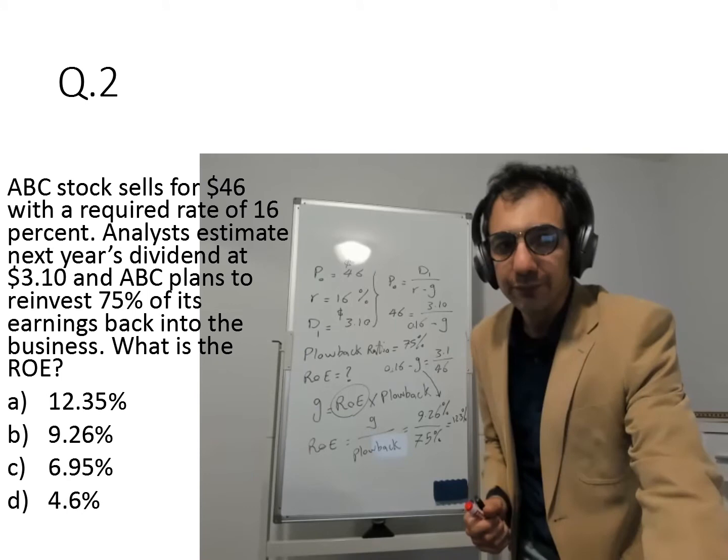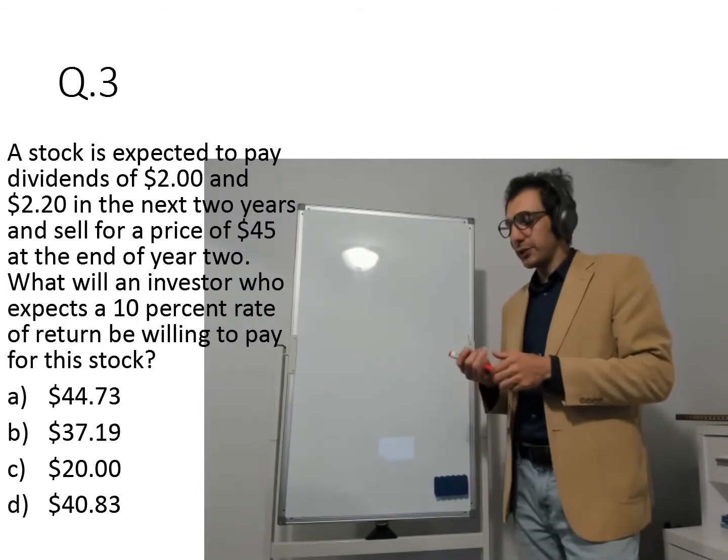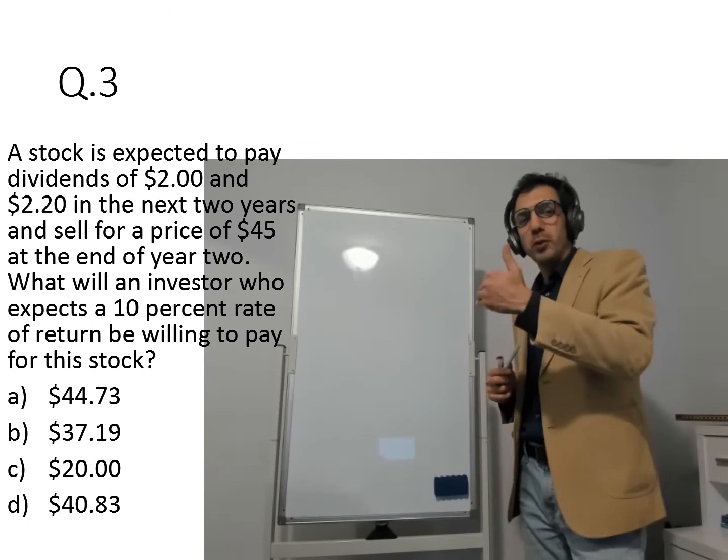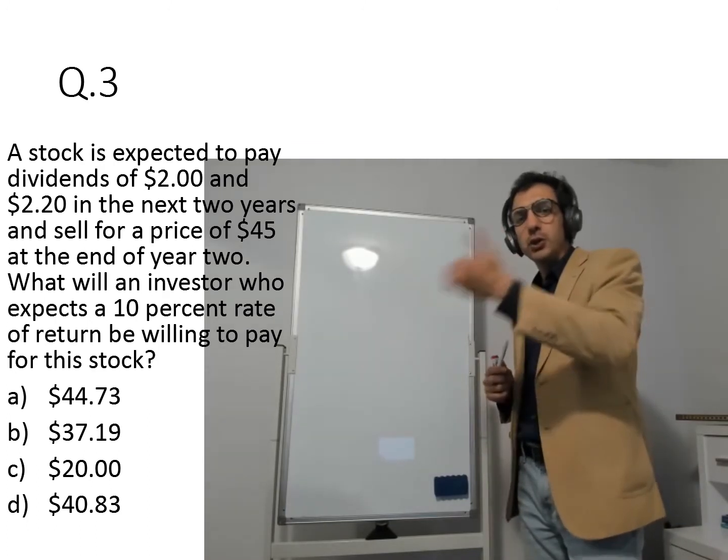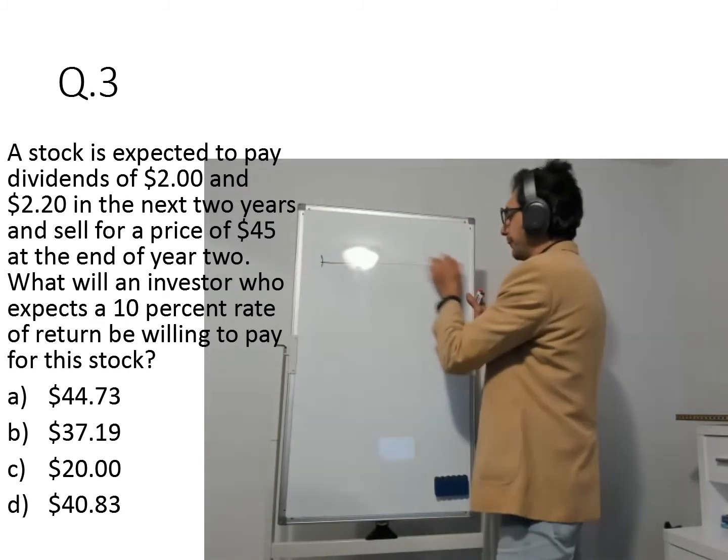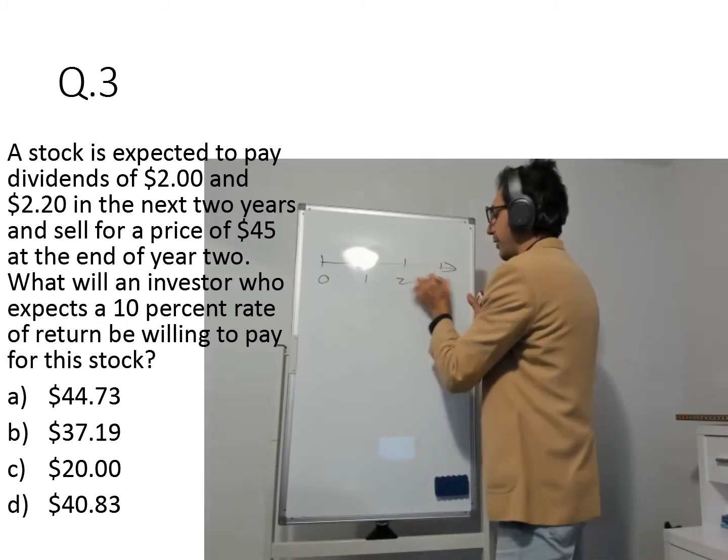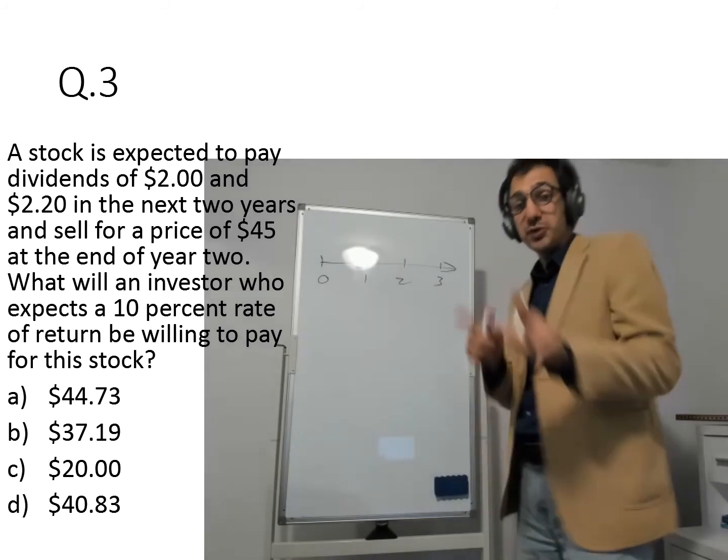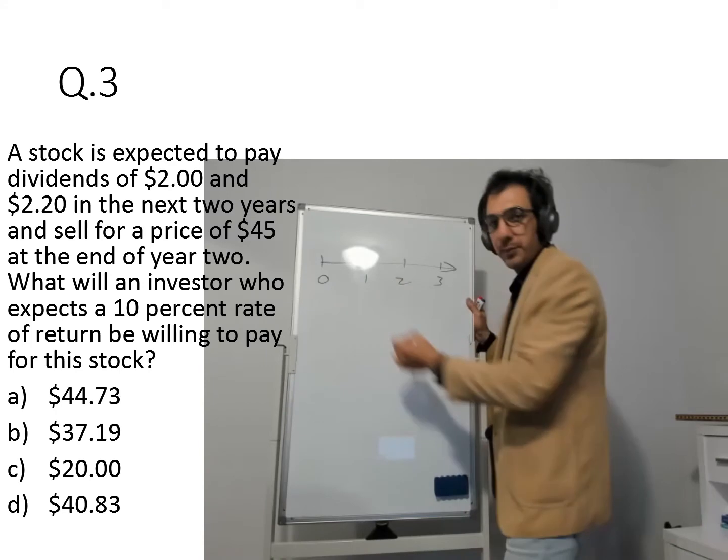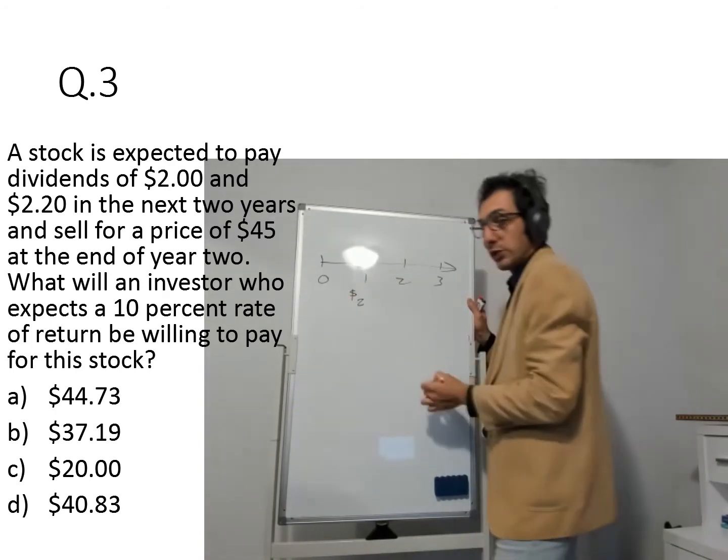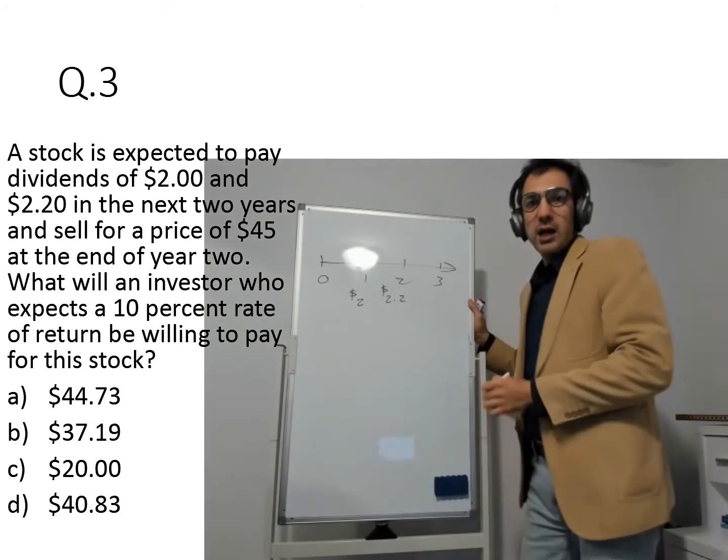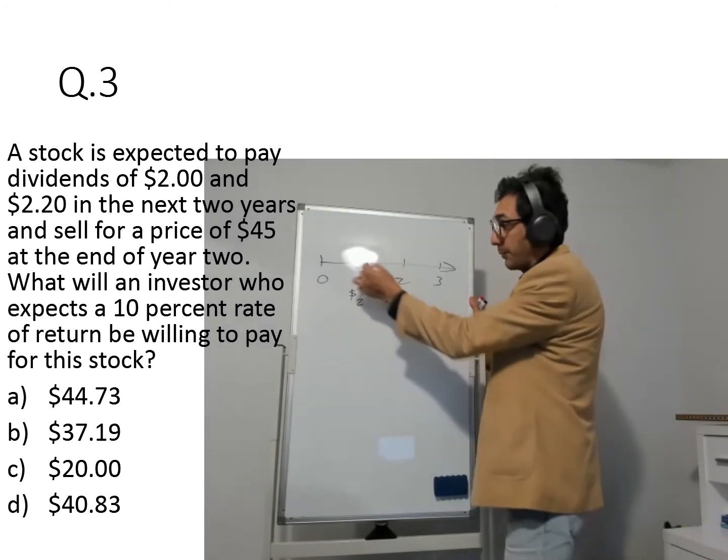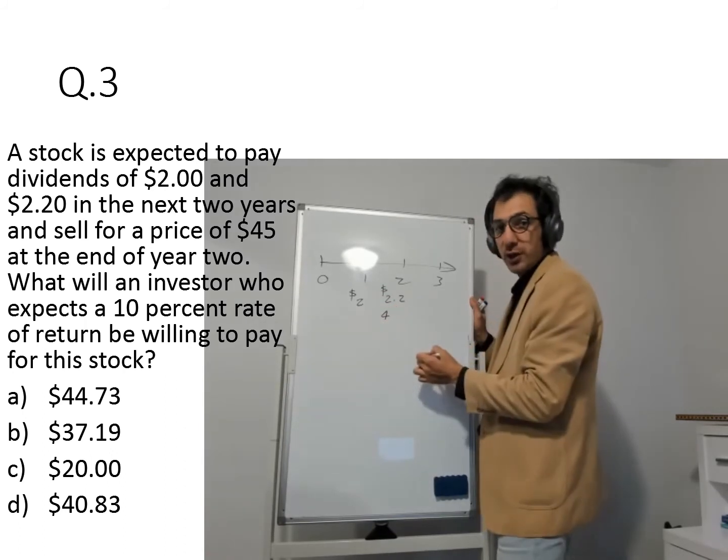So this question, as you see, is related to the non-constant growth rate. We mentioned in some cases that the stock is growing. The stock dividend is growing with the super normal rate. And after a few years, it goes back to the normal growth rate. Now let's go with the timeline and see what we have here. It's saying the stock is expected to pay dividends of $2 and $2.20 in the next two years. Be careful. It's not saying from now, next two years. So one year from now, it should pay $2. Two years from now, it's paying $2.20. And sell for a price of $45. So at the same time, when the company is paying dividend by the end of the year, you are selling the stock at $45.